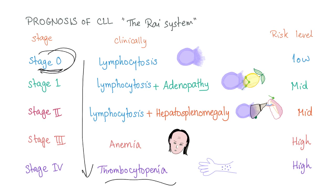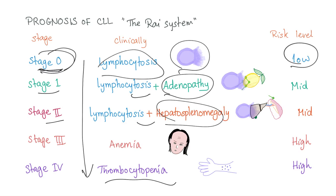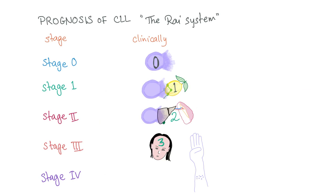Stage zero: lymphocytosis with smudge cells — low risk. Stage one: add adenopathy to the lymphocytosis. Stage two: add hepatosplenomegaly to the lymphocytosis. Both stage one and stage two are medium risk. Stage three is anemia; stage four is thrombocytopenia — both carry high risk, meaning the prognosis is bad.